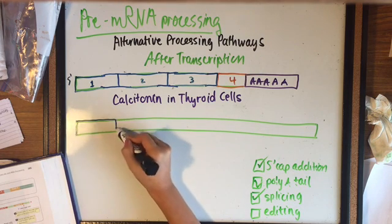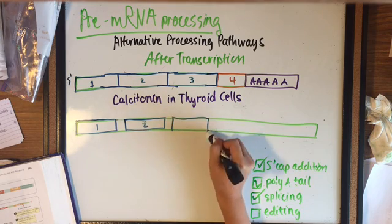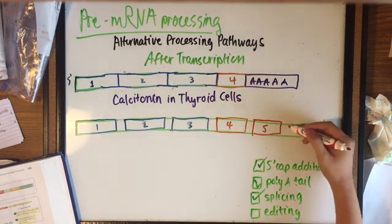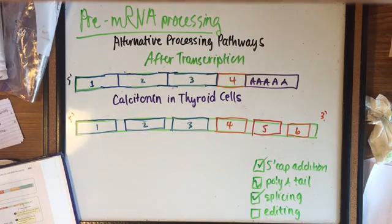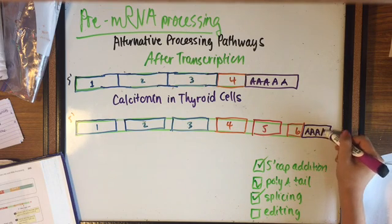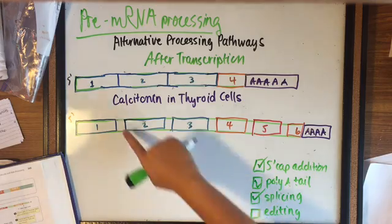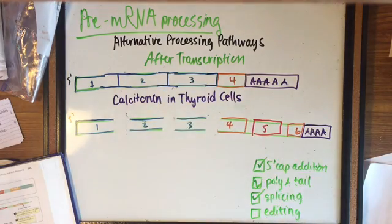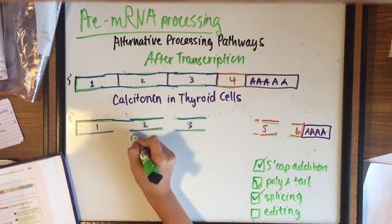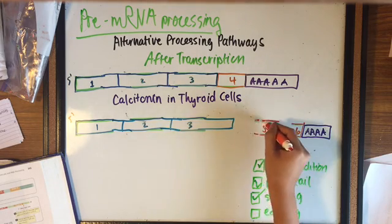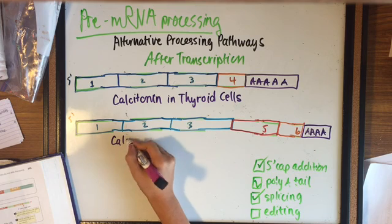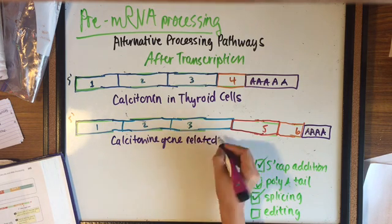Now we will look at what would happen if the pre-mRNA were cleaved after the 6th exon. If cleavage were to happen after the 6th exon, the poly-A tail would be added right after the 6th exon. Now it goes through RNA splicing in which all the introns are removed. During this type of splicing, exon 4 is eliminated with the 5 introns. Therefore producing an mRNA that contains exons 1, 2, 3, 5, and 6, which yields the calcitonin gene-related peptide, which are produced in brain cells.